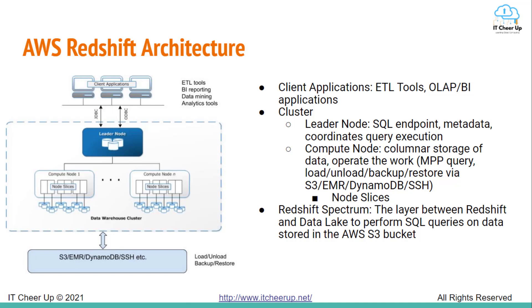AWS Redshift is a fully-managed data warehouse solution based on PostgreSQL, but goes beyond just PostgreSQL. The core infrastructure component is a cluster, composed of one or more compute nodes. The client application interacts directly only with the leader node. Inside each compute node, it is partitioned into slices. Redshift reduces I/O through columnar storage, data compression, and massively parallel processing. AWS Redshift also introduces Redshift Spectrum, which directly performs SQL queries on data stored in AWS S3 without moving data to the data warehouse.